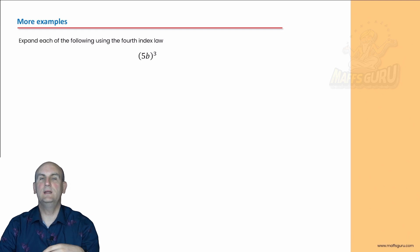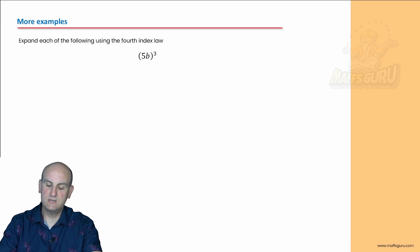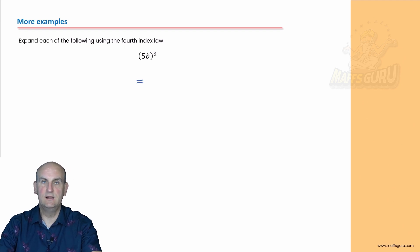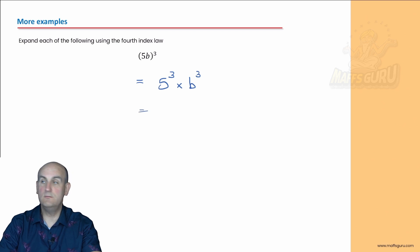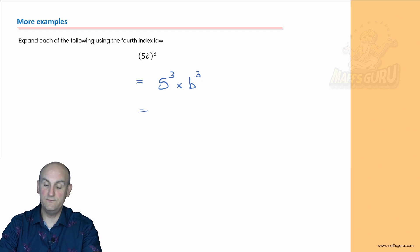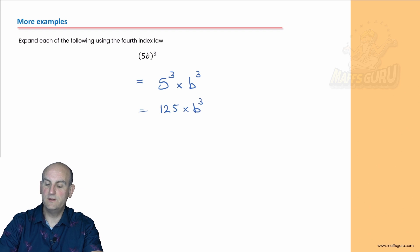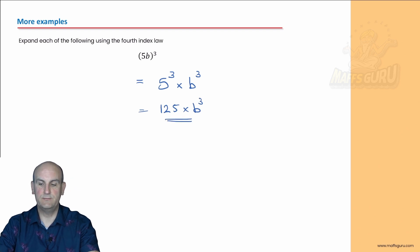Let's do a few more simple examples. We're just going to go straight and use the rule. Everything inside the bracket gets raised to the power of 3. So you've got 5 to the power of 3 times b to the power of 3. 5 times 5 times 5 is 125. And b to the power of 3. Easy example so far.